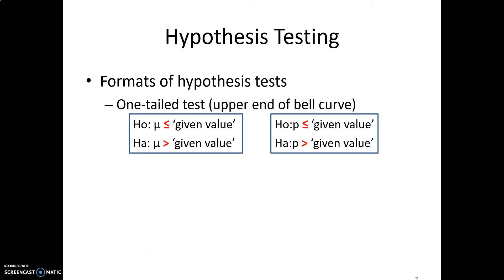We can quickly look at the formats of the other types of tests. These are called one-tailed tests. So key words are going to be, you know, greater than, less, more, at least. These are going to be the same words for the other type of hypotheses test or format as well.